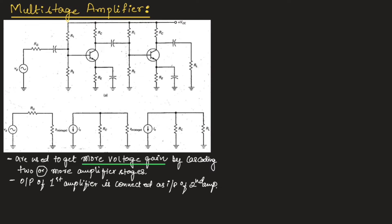Figure A and B shows the multi-stage amplifier. Figure B is the AC equivalent circuit for a two-stage amplifier. This is the first amplifier and this is the second amplifier. The output of the first amplifier is connected as input to the second amplifier as shown in this figure.